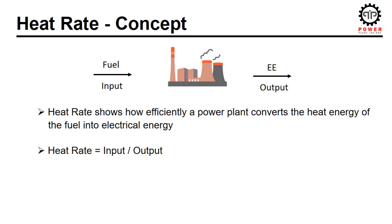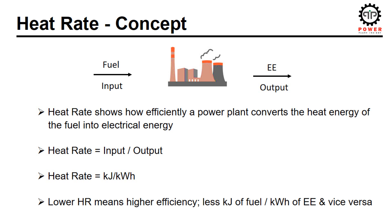Heat rate is the ratio of input to output. In other words, heat rate is the amount of fuel energy consumed to generate per kilowatt-hour of electrical energy. If the value of heat rate is less, it means that its efficiency is higher, because less energy of fuel is required to generate per kilowatt-hour of electrical energy. We will understand these statements when we do an exercise of heat rate calculation at the end.